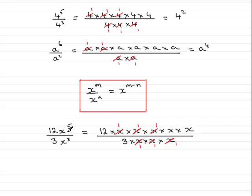Now, it's a very common mistake to say 12 take away 3 is 9 — it doesn't work like that. When cancelling the 12 and the 3, we're looking for a number that goes into both, which is 3. 3 into 12 goes 4, and 3 into 3 goes 1. So we don't get 9 — we get 4 times x squared over 1. Therefore 4x squared is the final result.